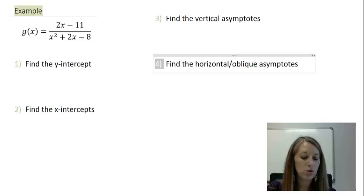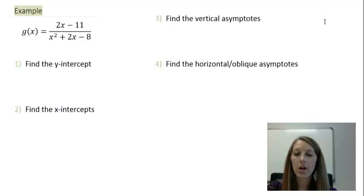Let's look at our example here. g of x is equal to 2x minus 11 over x squared plus 2x minus 8. I encourage you to pause the video at this time to see if you can come up with each of these four steps on your own, and then draw a sketch of the graph on your own. Once you get that done, come back and double-check to see how well you've done.